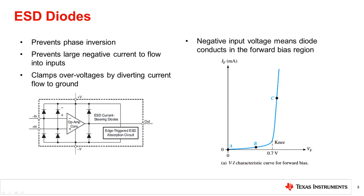The figure on the right shows the voltage-current characteristic curve for a diode in the forward bias region. When we have a negative input voltage or a voltage below ground, the diode is in the forward bias region. The diode does not start conducting current until it reaches a certain voltage, called the knee point. After this knee voltage point, the diode conducts current linearly with voltage.